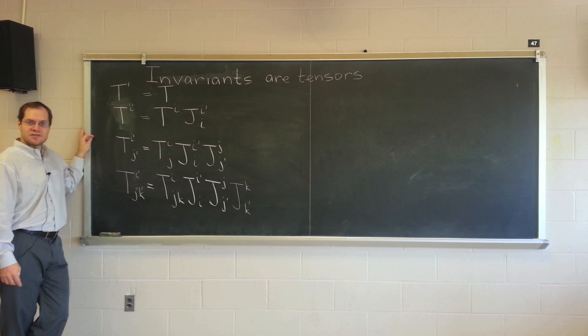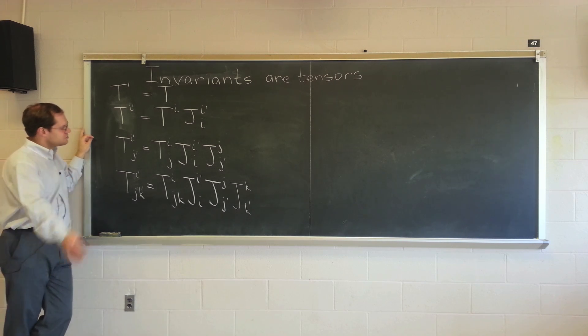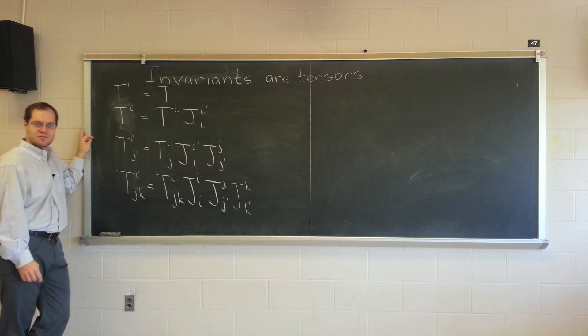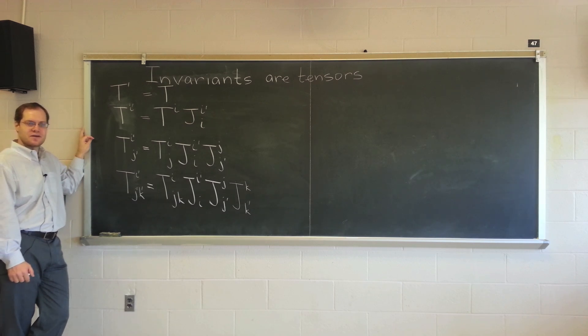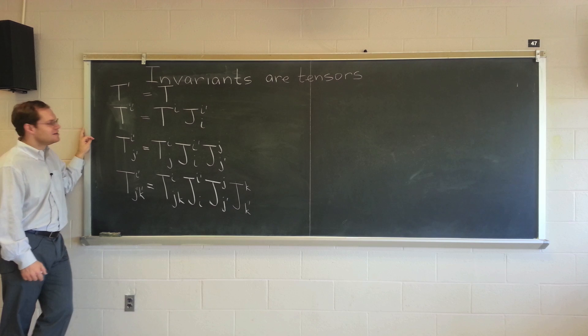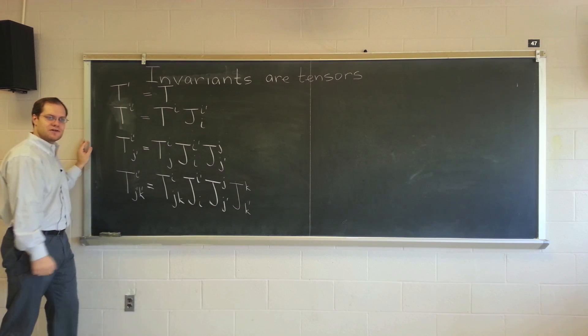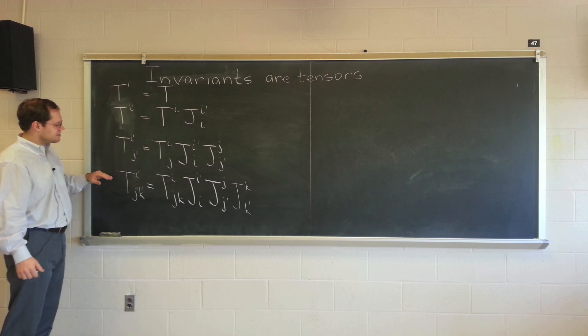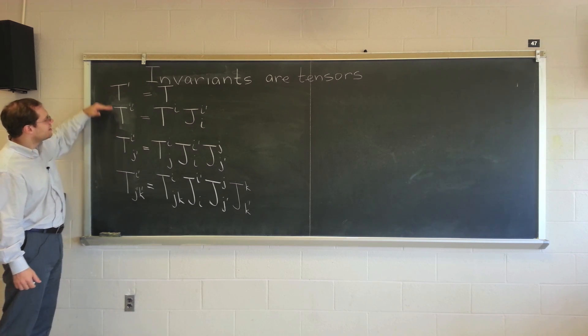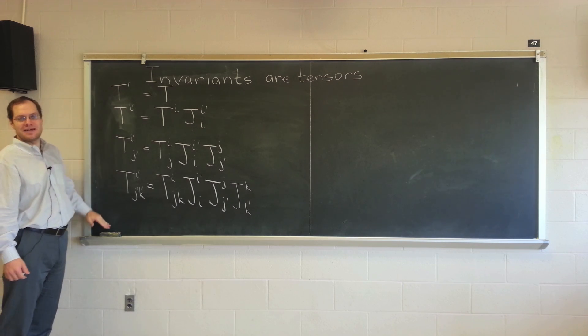You pursue the same recipe. You contract away all indices. You end up with a tensor with no indices. A tensor or a variant with no indices, a variant of order zero. And it's called an invariant if the values are the same in all coordinate systems.